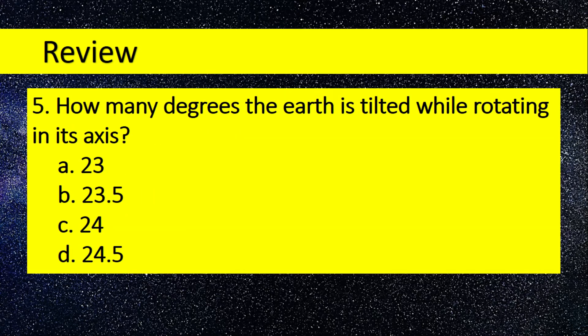Number 5. How many degrees is the Earth tilted while rotating on its axis? A. 23, B. 23.5, C. 24, D. 24.5. Answer: 23.5.